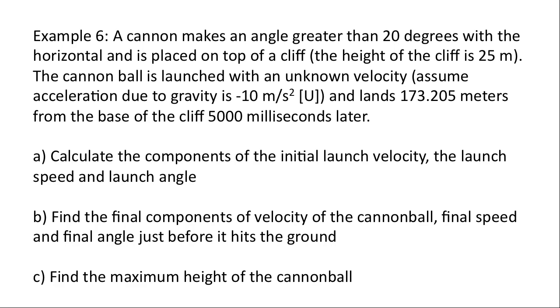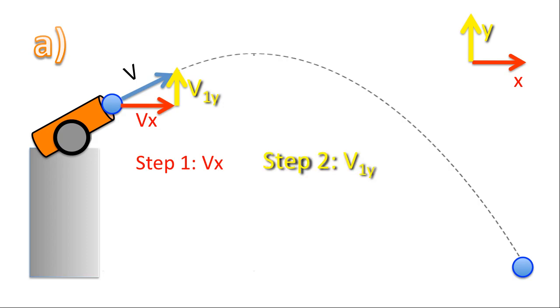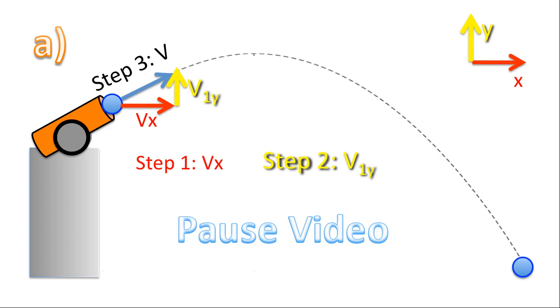So this is the diagram that we have. And the question is, what is that launch velocity? So we need to break this apart once again into an x and a y direction. And we need to label the vx and the v1y for this vector. So step one, we're going to solve for vx. Step two, we're going to solve for v1y. And step three, once we have vx and v1y, Pythagorean theorem will give us v, for the speed. Please pause the video now and see how far you can get with this question.